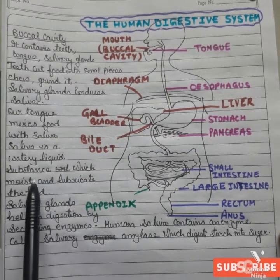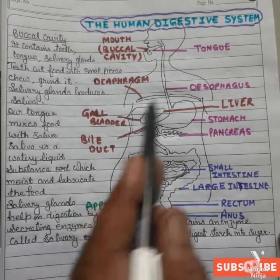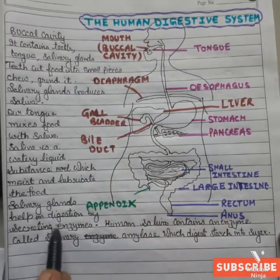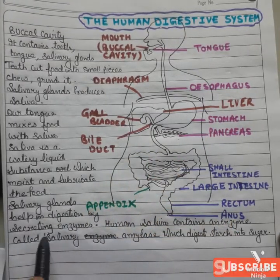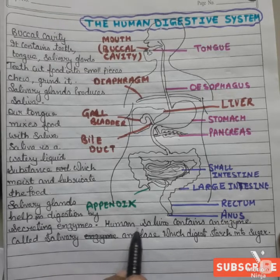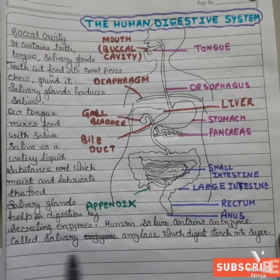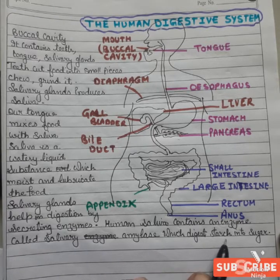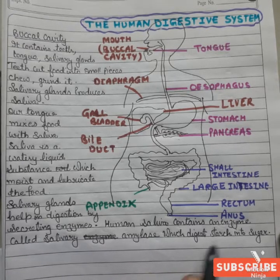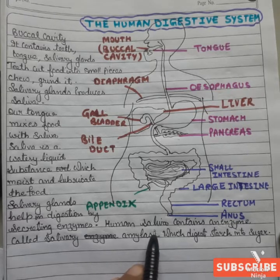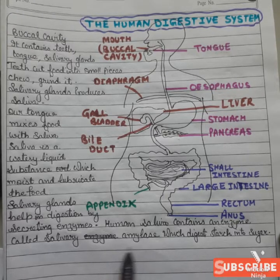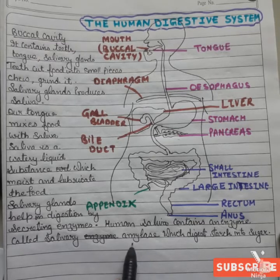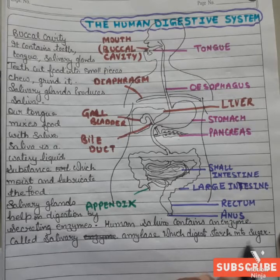Saliva is a watery liquid that moistens and lubricates the food. Salivary glands help in digestion by secreting enzymes. Human saliva contains an enzyme called salivary amylase, which digests starch into sugar.